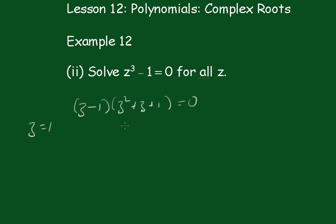And z equals minus 1 plus or minus the square root of 1 minus 4, all over 2. So z equals minus 1 half plus or minus i root 3 over 2.